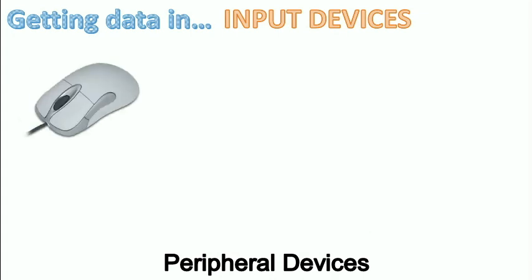Here is a mouse — it's very familiar to most people and it's probably the most common input device along with a keyboard. This mouse allows you to click on icons, select buttons, and highlight text. It's actually a really important input device, and there are different kinds.